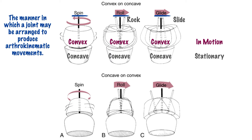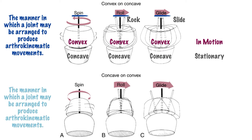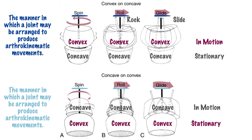Moving down to our second row, we again have the same spin, roll, and glide movements, however what's being shown is that the concave structure is the one in motion while the convex structure remains relatively stationary. In summary, it's these small movements of spin, roll, and glide that make our larger joint movements — such as flexion, extension, abduction, and adduction — possible.